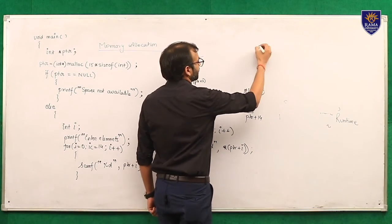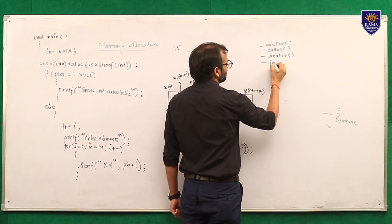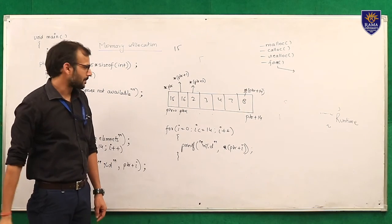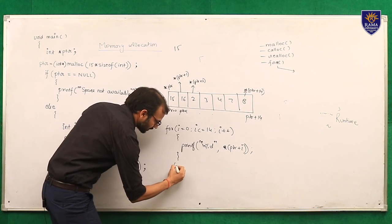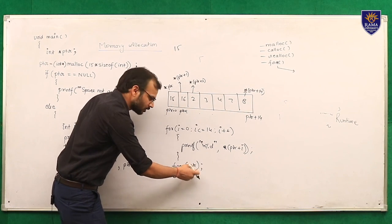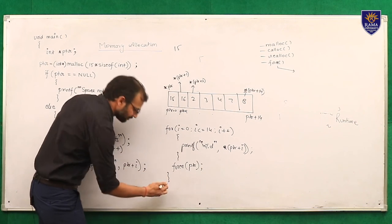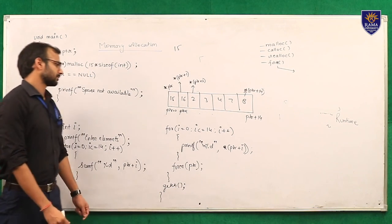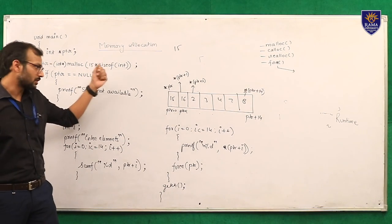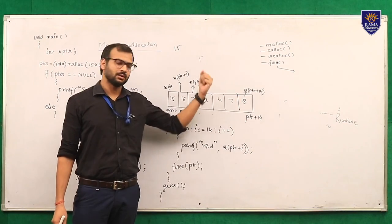After storing the values, we print them using a for loop with printf asterisk PTR plus i followed by a newline to print each value on the next line. Then we need to release the memory using the free function. We write free(PTR), which will vanish all values stored by the pointer variable. We close the else bracket and add getch(). This is the complete program for dynamic memory allocation using pointers, storing 15 elements by index via a pointer variable.